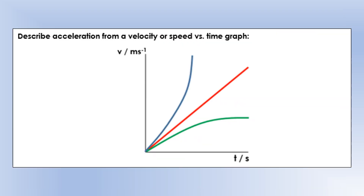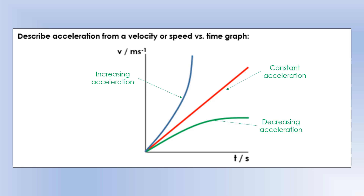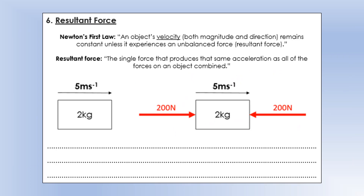Just as before, we can describe acceleration from a velocity versus time graph by its shape. One graph shows clearly increasing acceleration, another shows constant acceleration, and another shows decreasing acceleration — but note this is not deceleration, because the velocity is always increasing over that period. The object is still accelerating; its acceleration is just getting smaller.